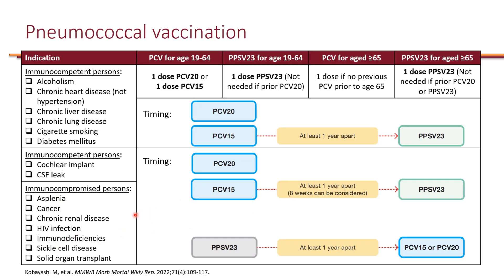If, for whatever reason, these individuals received PPSV23 first, they just need to wait one year before getting either PCV15 or PCV20. Once they receive this vaccination series, they are done — when they turn 65, there is no need for additional vaccination if they have already received the appropriate vaccines.